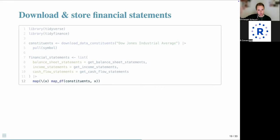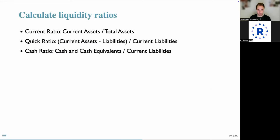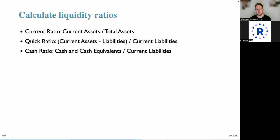We now have a list of financial statement information for these 30 companies over five years. Let's start with the first type of financial ratio: liquidity ratios. For each category, there are many variants — we focus on the three we believe are most commonly used. For liquidity ratios, we picked the current ratio, the quick ratio, and the cash ratio.